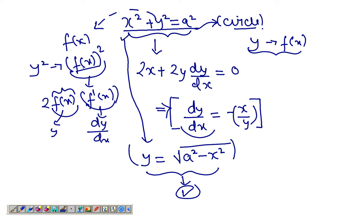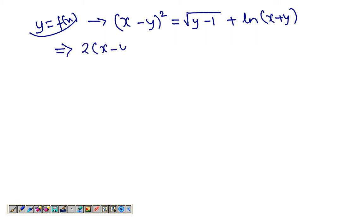Let's take another example. We have (x - y)² equals √(y - 1) plus ln(x + y). The thing you have to remember is y is still a function of x, and then we start to differentiate. We get 2(x - y) here.